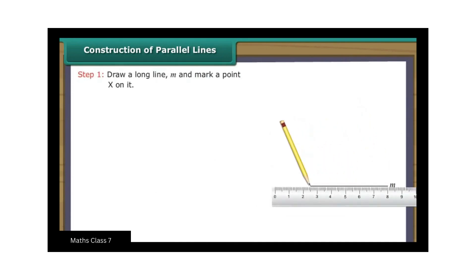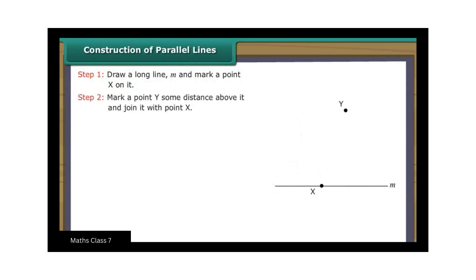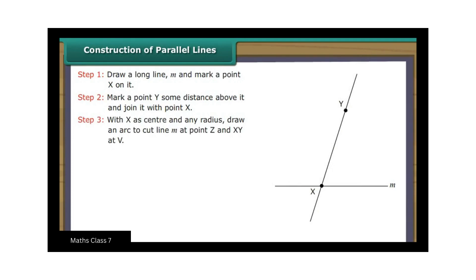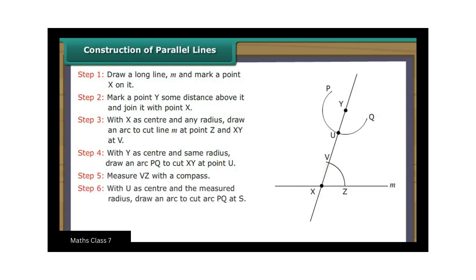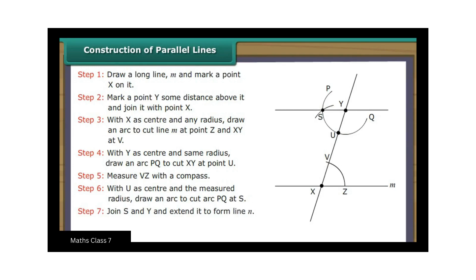Draw a long line M and mark a point X on it. Mark a point Y some distance above it and join it with point X. With X as center and any radius, draw an arc to cut line M at point Z and XY at V. With Y as center and the same radius, draw an arc PQ to cut XY at point U. Measure VZ with a compass. With U as center and the measured radius, draw an arc to cut arc PQ at S. Join S and Y and extend it to form line N.